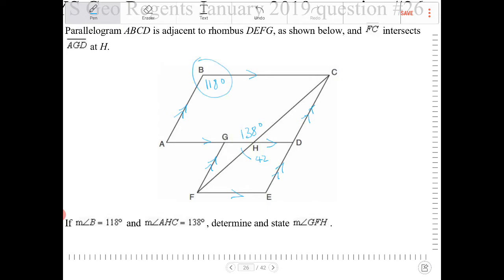Angle B here is 118. And in a parallelogram, we know that the opposite angles are supposed to be congruent. So this must be 118.